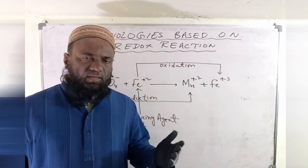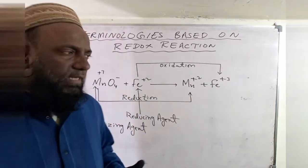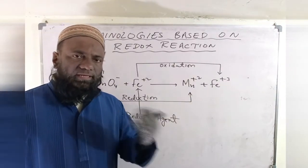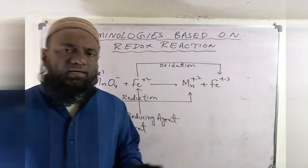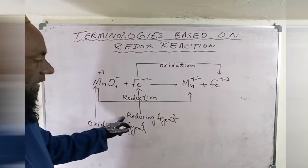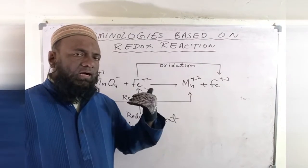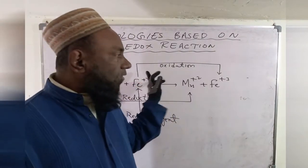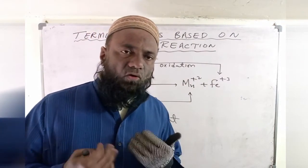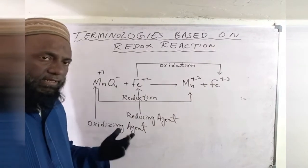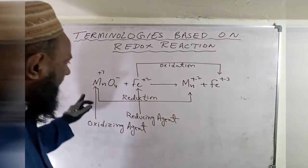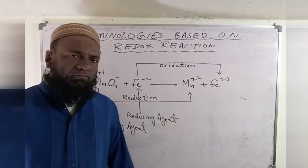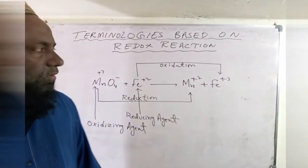The one who does the giving and taking — the Give and Take work — is called the Agent. So the Reducing Agent is donating electrons, and the Oxidizing Agent is gaining electrons. This is the fundamental terminology of redox reactions. In the next video, we will discuss how to balance redox reactions, inshallah. Thank you.